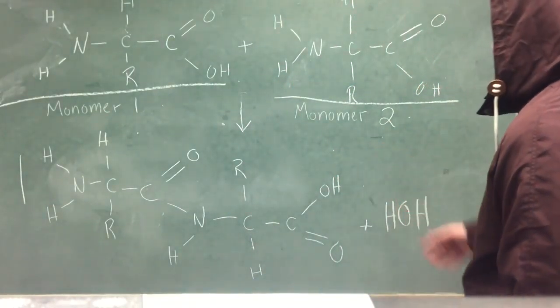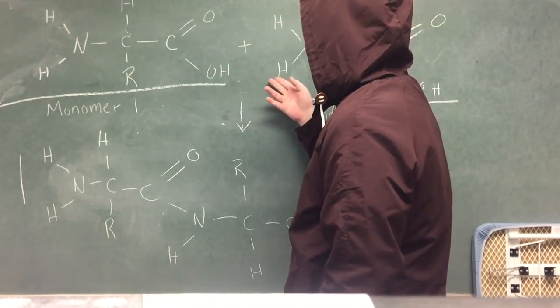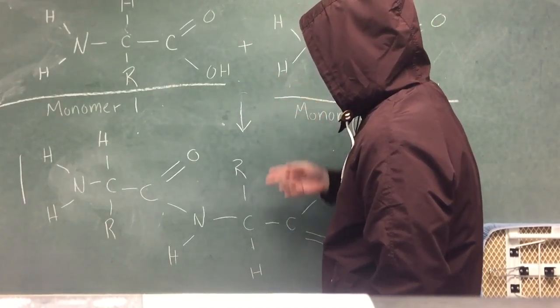To reiterate what Jonathan said, you have two monomers, one with the hydrogen and one with the hydroxide, which lose the hydrogen and hydroxide to form a polymer.